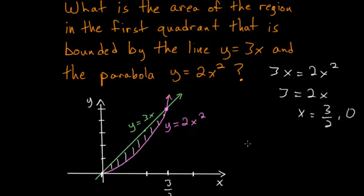So in other words, what we're trying to find is the integral from 0 to 3 halves of the top function minus the bottom function. So 3x minus 2x squared. And we'll take this integral with respect to x.